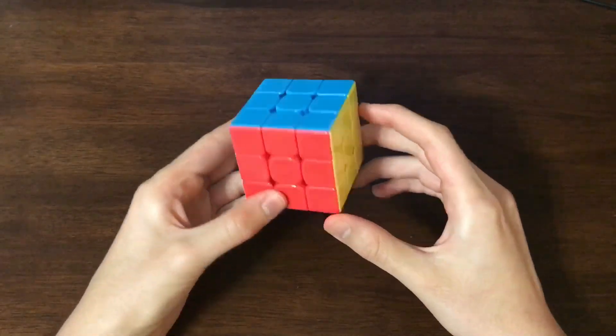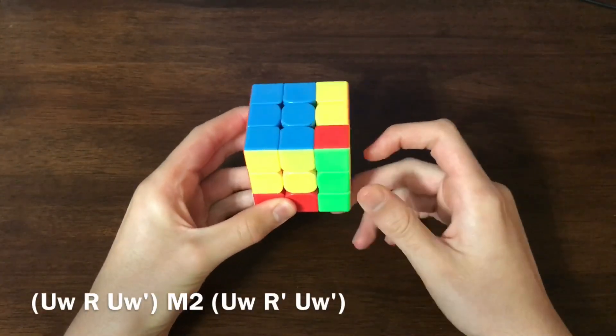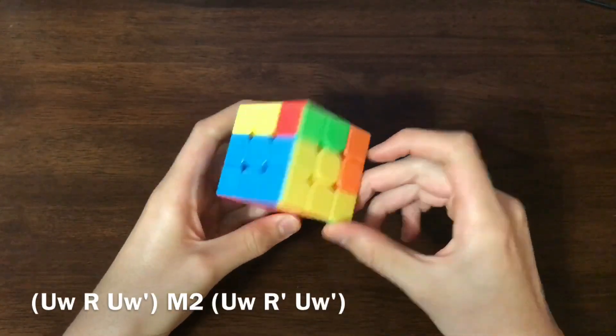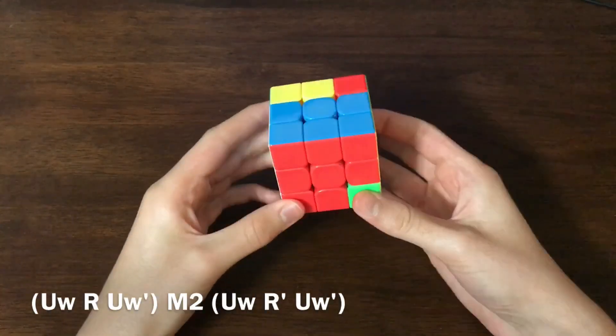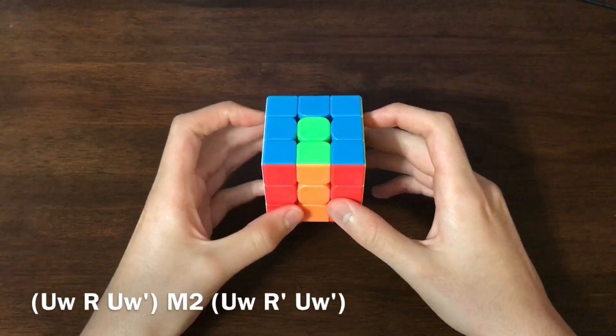And that's not terrible, but it's very slow to the alg in comparison that I'm going to show you. So for RB, we can use wide U, R, wide U prime, like that, and that will insert RB into UB, as you want to do, and you can just do your M2, undo. As you can see, it solves that target.